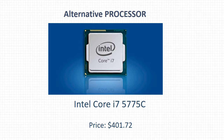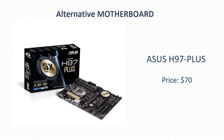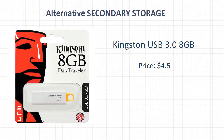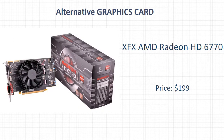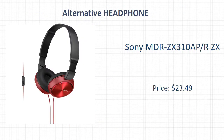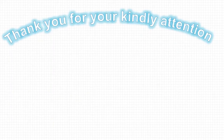Here are the alternative components for all components above: Intel Core i7-5775C processor, Asus H97 Plus motherboard, Corsair Vengeance 8GB DDR3 RAM, Kingston USB 3.0 8GB secondary storage, AMD Radeon HD 6770 graphics card, and Asus G226HQL monitor with I-Home IHK-301 keyboard, mouse, and Sony MDR-ZX310AP headphone.